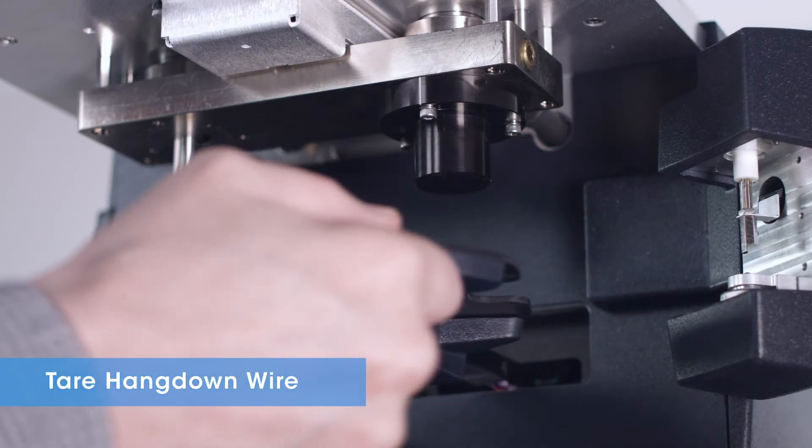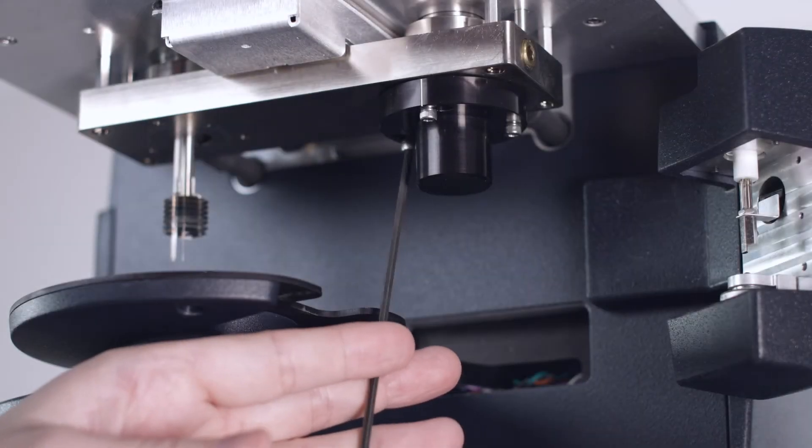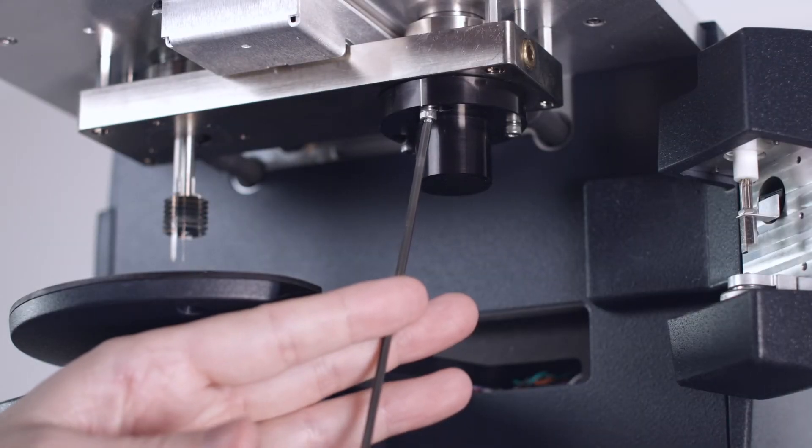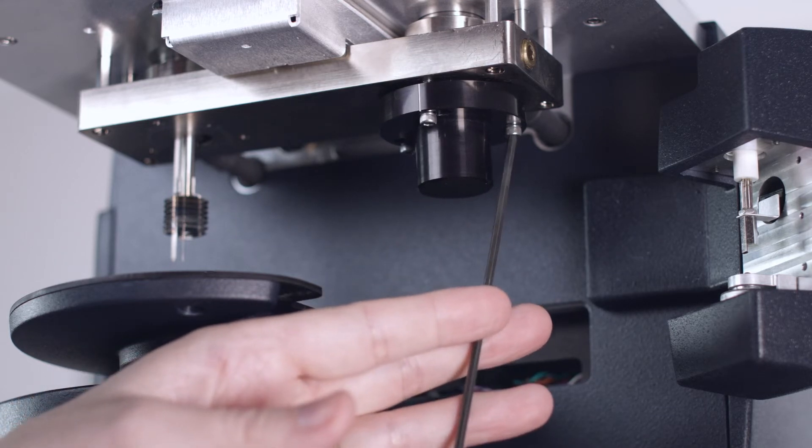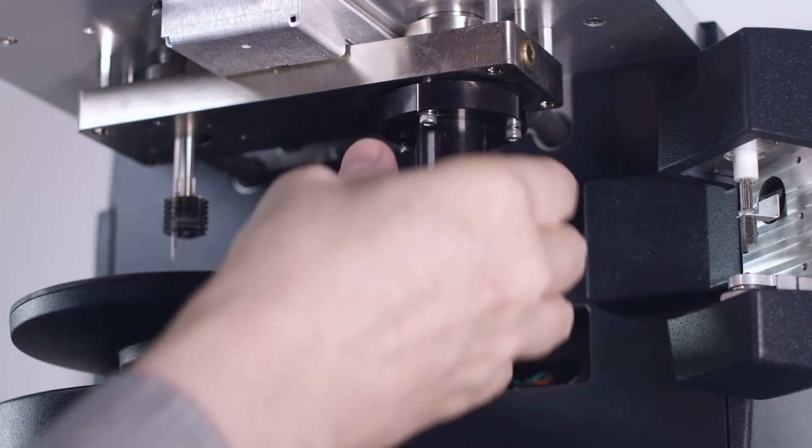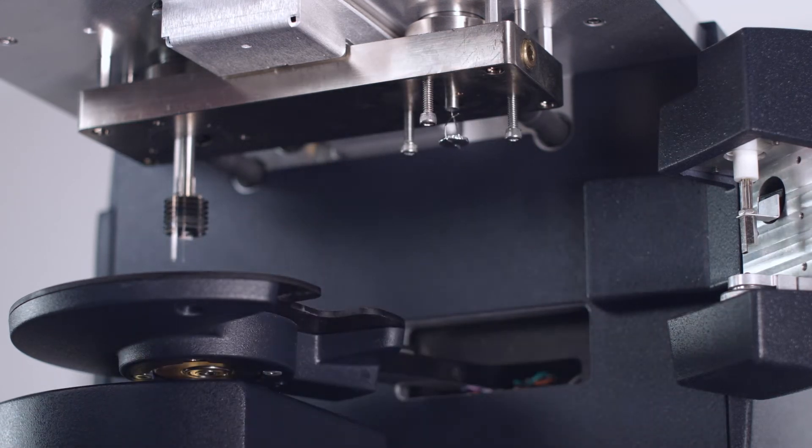To remove the tear hang down wire, first using the 7/64th ball driver from the accessory kit, loosen, but do not remove, the three screws holding the tear cover in place. Rotate the tear cover clockwise and lower it.